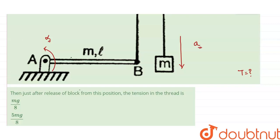The weight of the rod acts downward from its center of mass, which is at L/2 from the hinge, so the weight MG acts at L/2. For the block moving downward with acceleration a, the weight MG acts downward and the tension T in the string acts vertically upward.